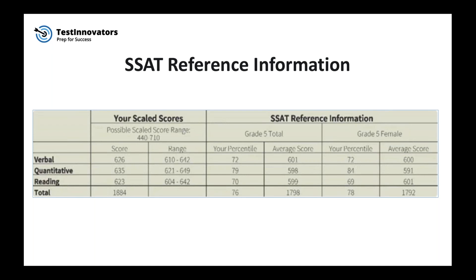Percentiles tell how well you did compared to other students in the same grade. For example, if a student is in the 70th percentile in reading, that means they scored better than 70 percent of students in their grade level who also took the reading section. As we can see, this student is a fifth grade female and scored in the 69th percentile compared to other females.